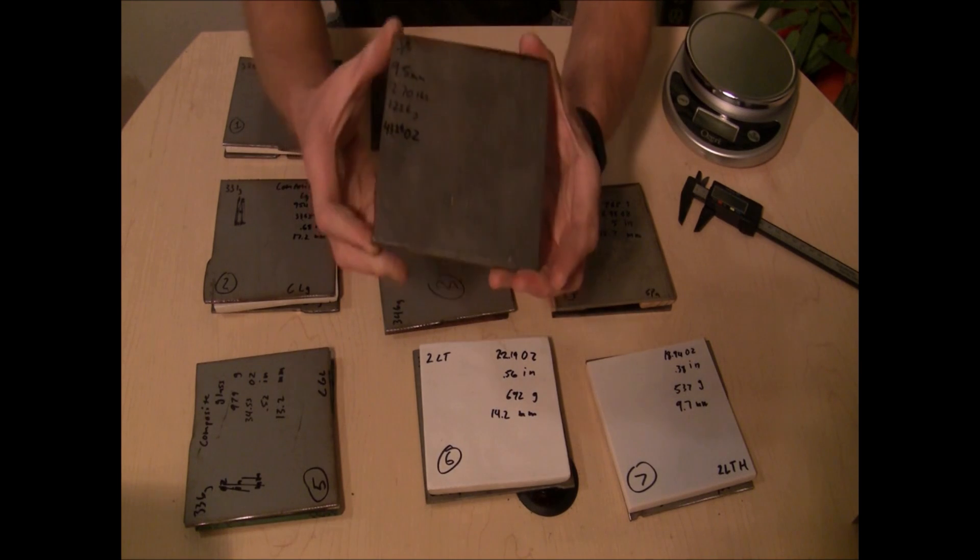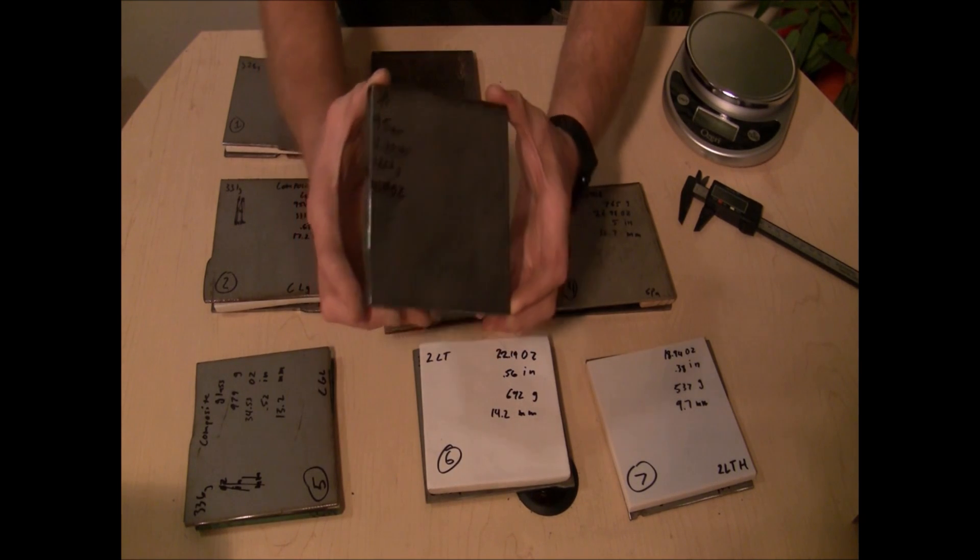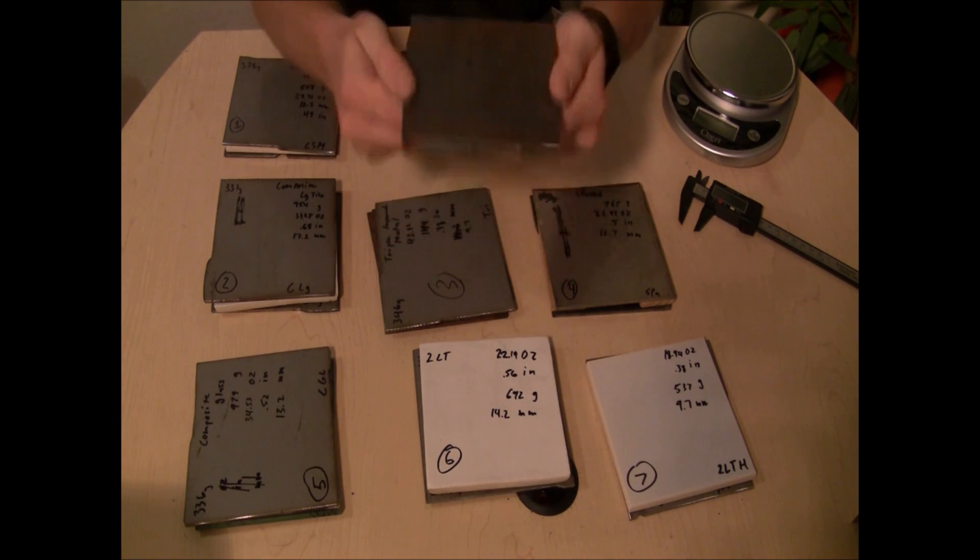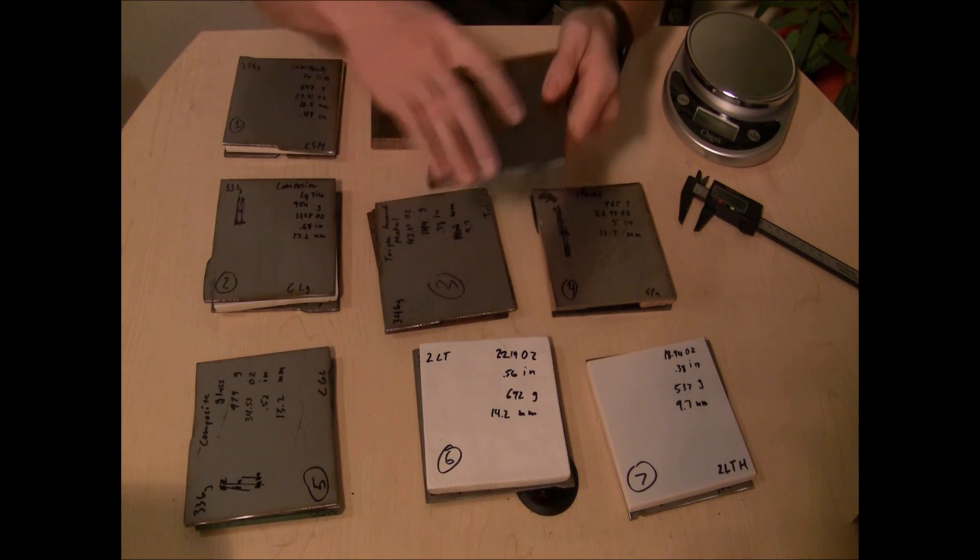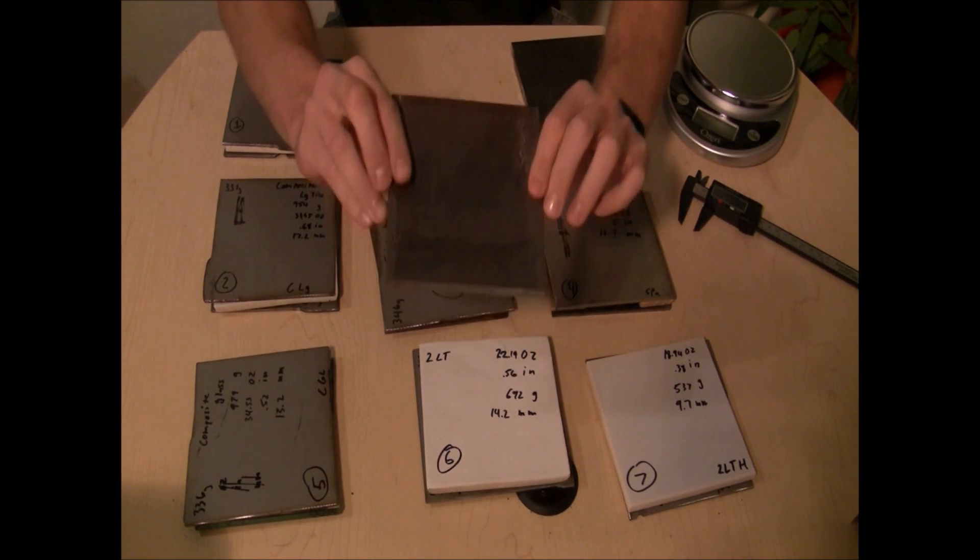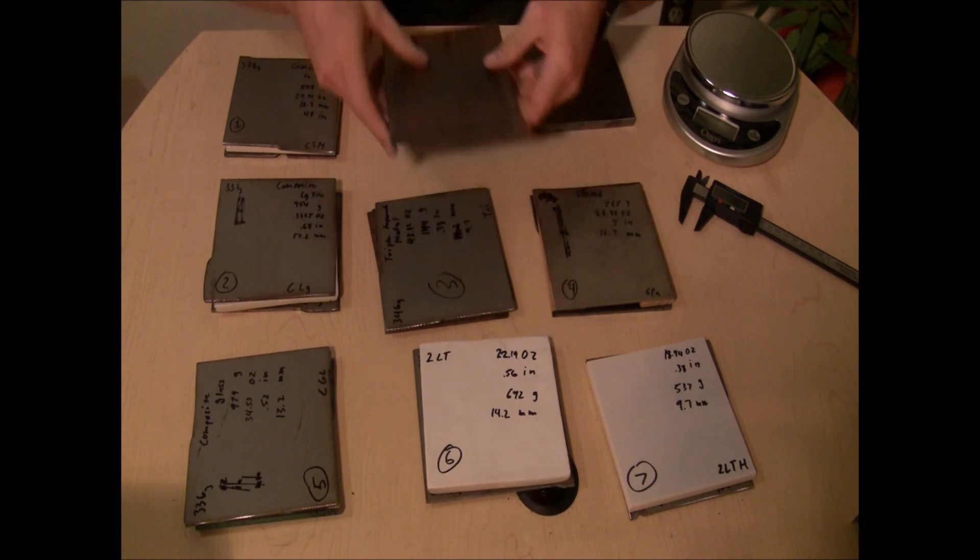Let's start here with our control. This is a 9.5 millimeter or 3/8 inch thick piece of mild steel. This is what everything will be compared against. Next, something a bit heavier, we have a 12.7 millimeter or 1/2 inch thick piece of mild steel.